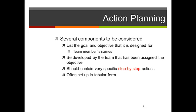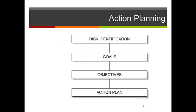Action planning lists goals and objectives with personnel names assigned to them. It's developed by the team assigned to the objective and contains very specific step-by-step actions, often set up in tabular form. You do risk identification to determine your risk, then set goals, then objectives, and then the action plan details how to put those objectives into action. The objectives are the road map to the goal, and the goal statements are the road map for the safety program.